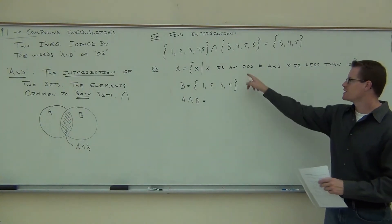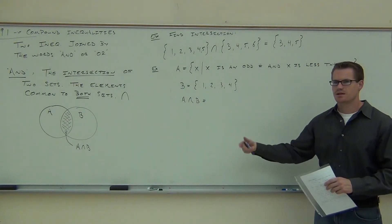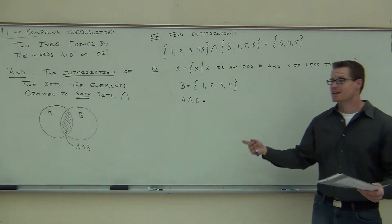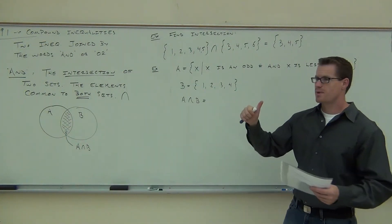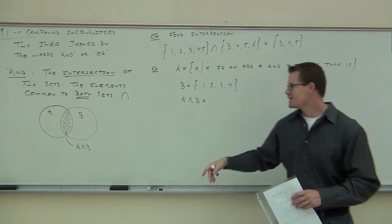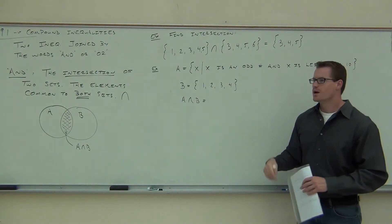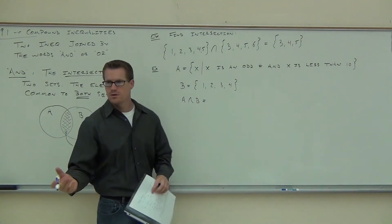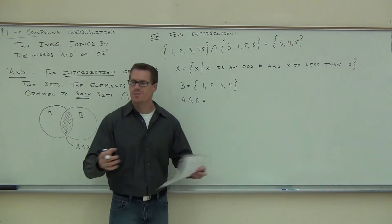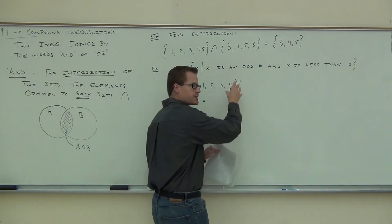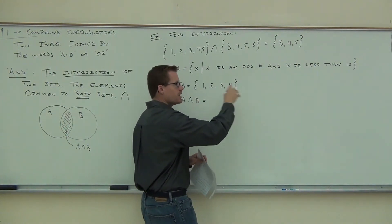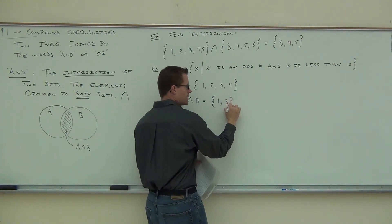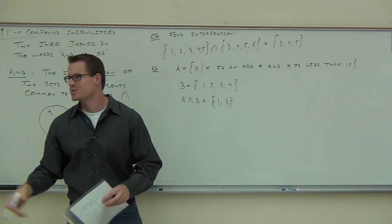You just need to be able to identify that. Odd numbers are 1, 3, 5, 7, 9, 11, 13, 15, 17, and so on. We're just talking about those less than 10: 1, 3, 5, 7, and 9. Set B is just {1, 2, 3, 4}. Tell me what numbers these two sets have in common. How about 2 and 4? No — they're not odd. They are all less than 10, but they're not odd, so they don't fit in both sets. Set A was {1, 3, 5, 7, 9} and set B was {1, 2, 3, 4}. The only ones they have in common are 1 and 3. So that's our intersection in this particular case.